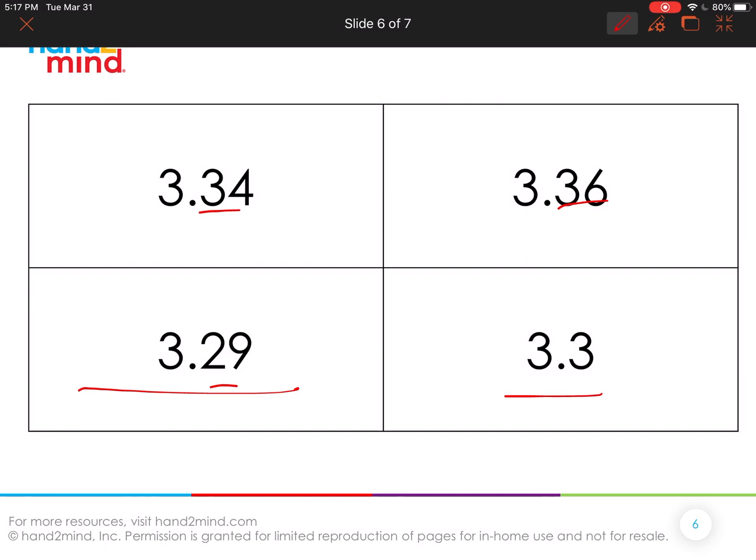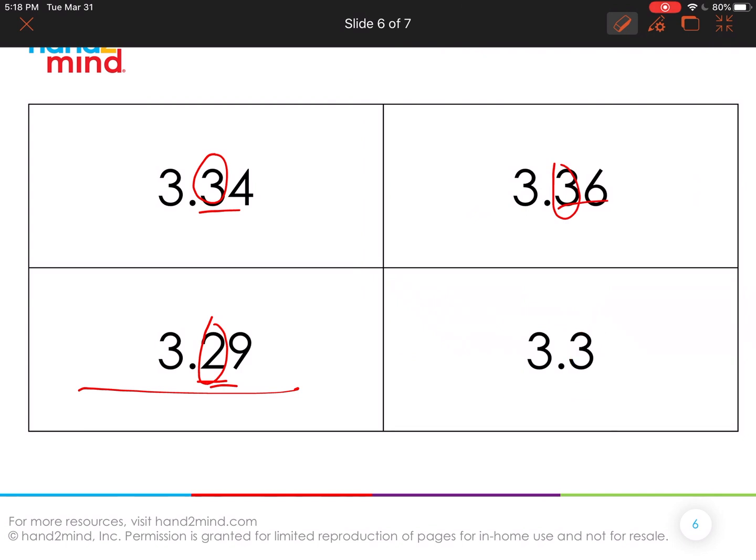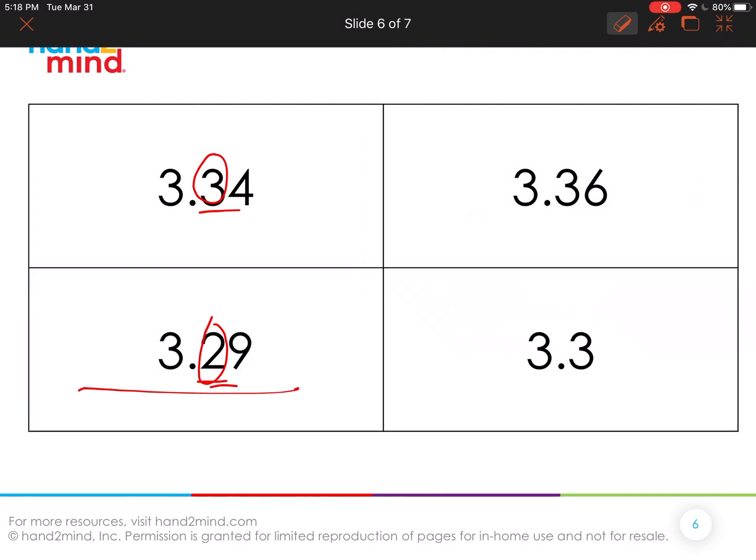Is it because, well, all of the numbers have three wholes, but when you look at the tenths, it's the only one that has a two in the tenths. What if I was to ask you, because those are definitely three and three tenths could not belong for that reason. And three and 0.29 could not belong for that answer.